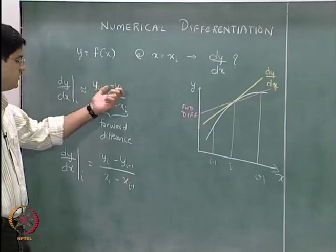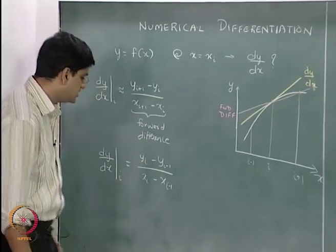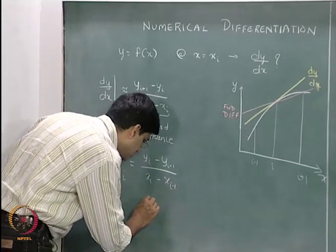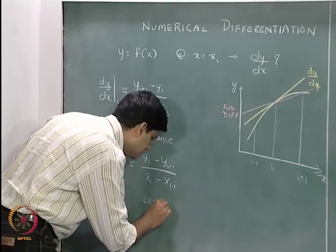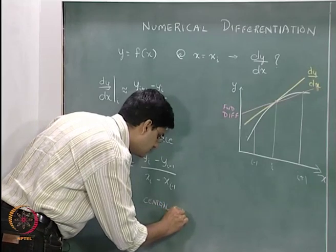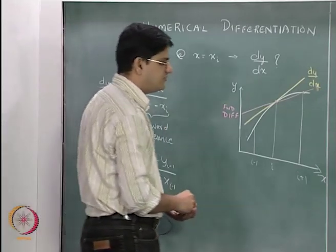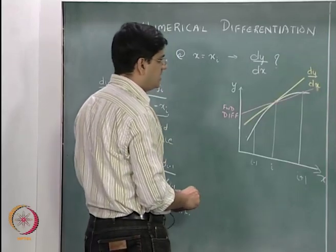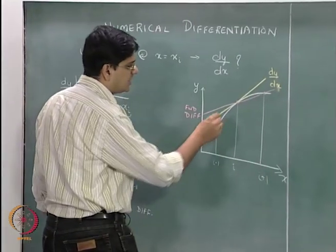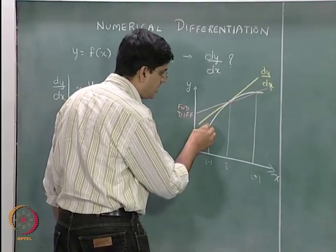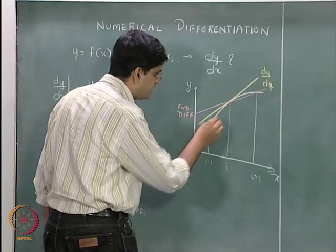Just the way we had written it in the forward difference form, we can write it alternatively in this form. This becomes our backward difference formula. The central difference formula in this case is the line joining (x_i-1, y_i-1) to (x_i, y_i).